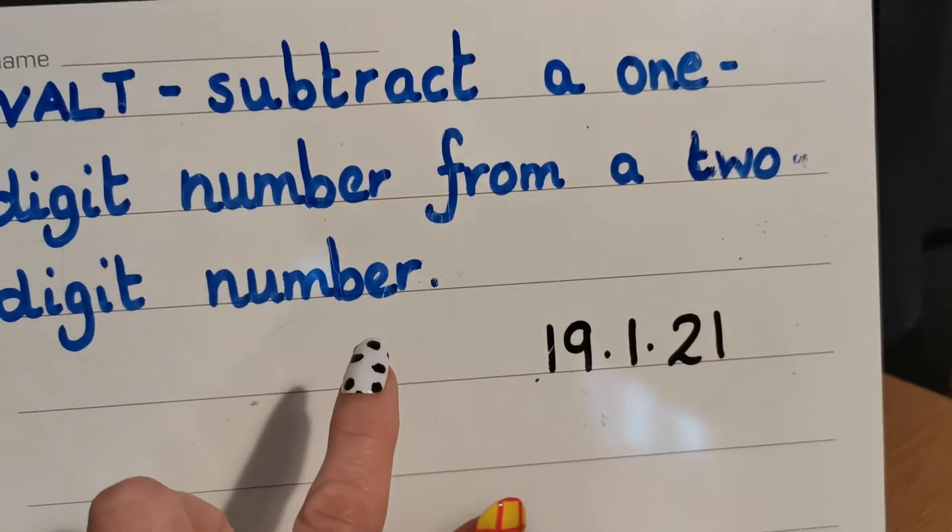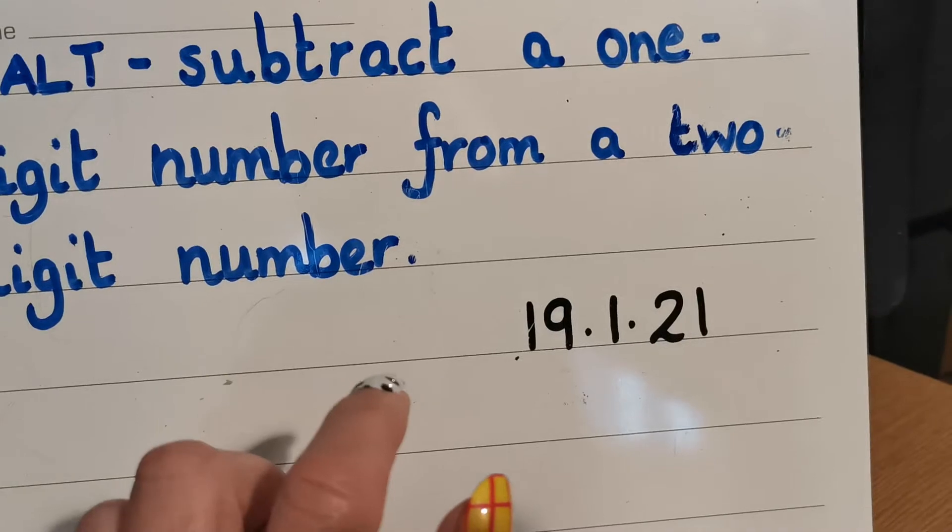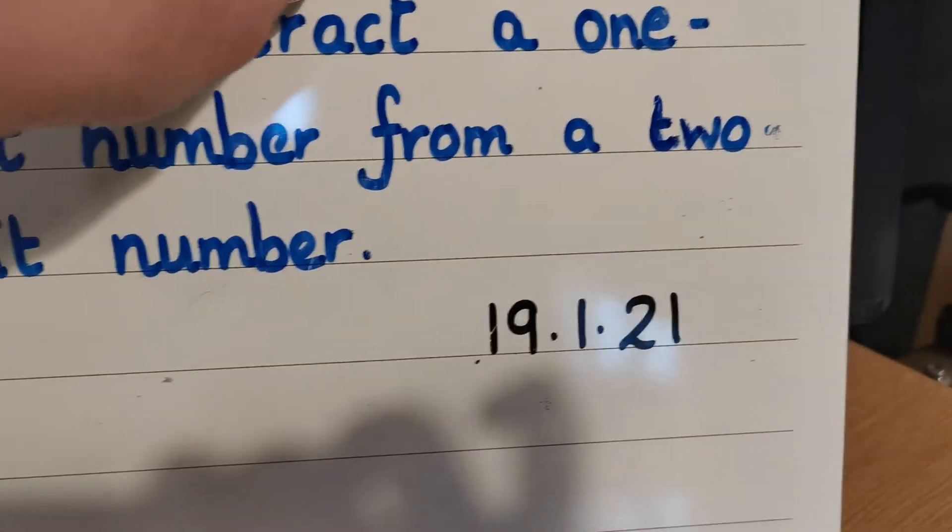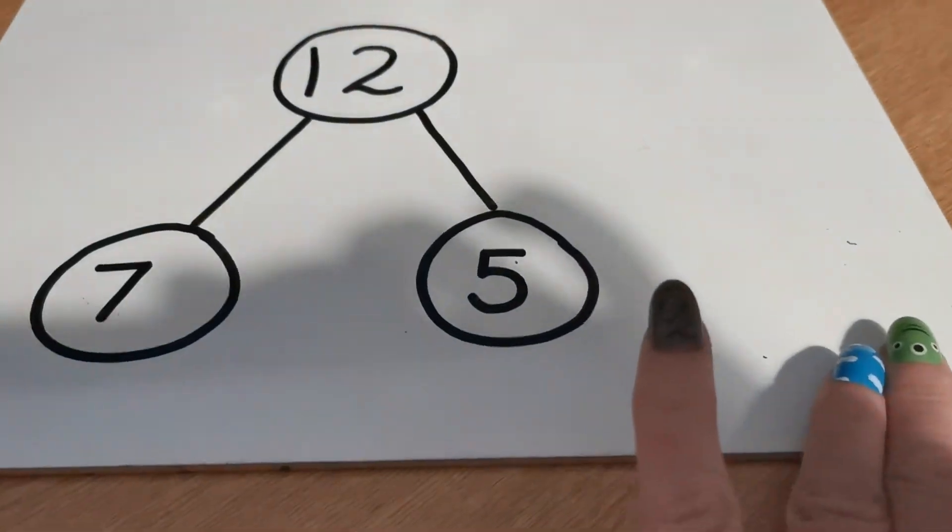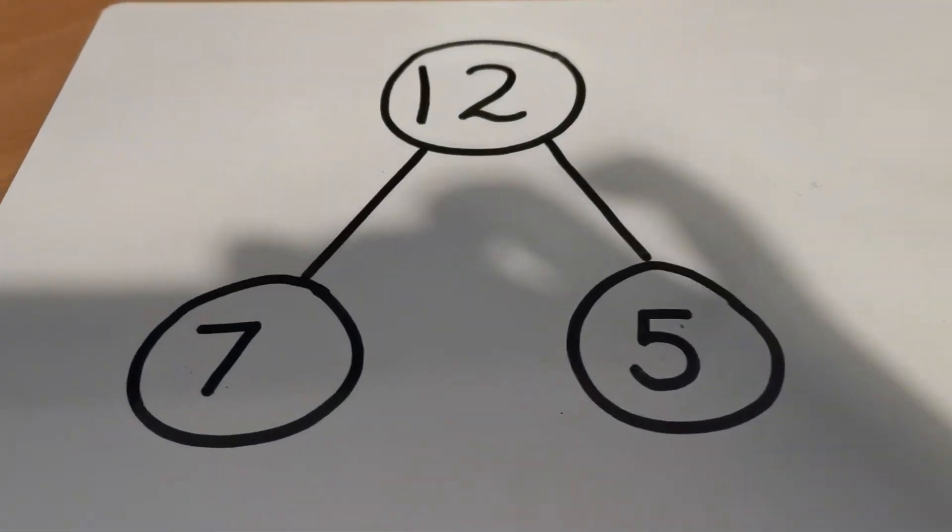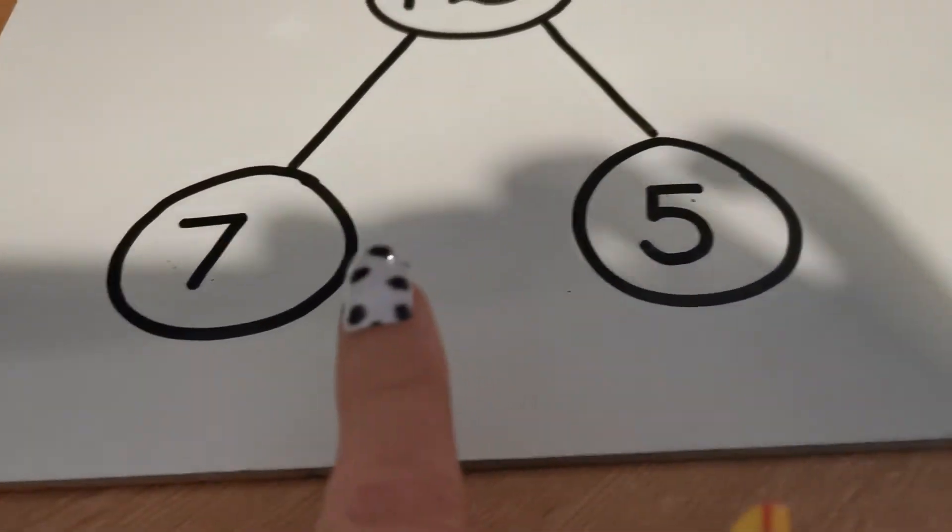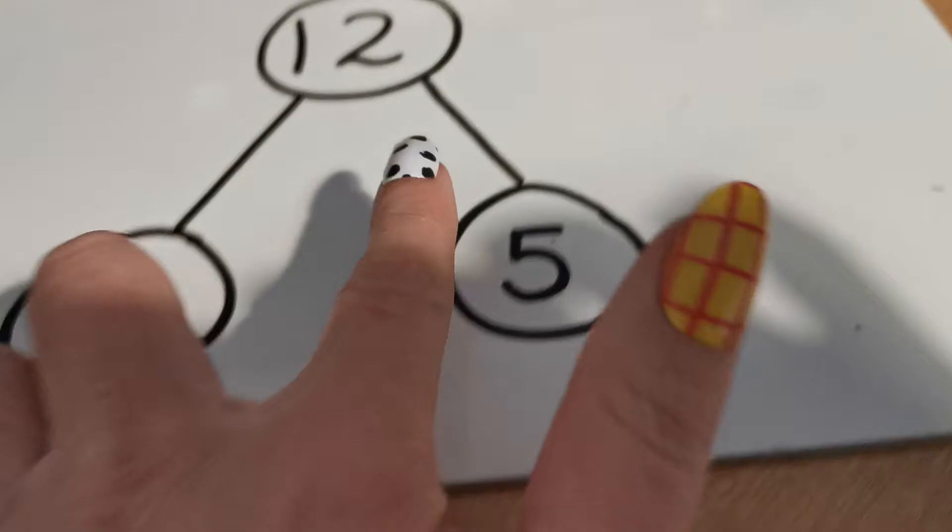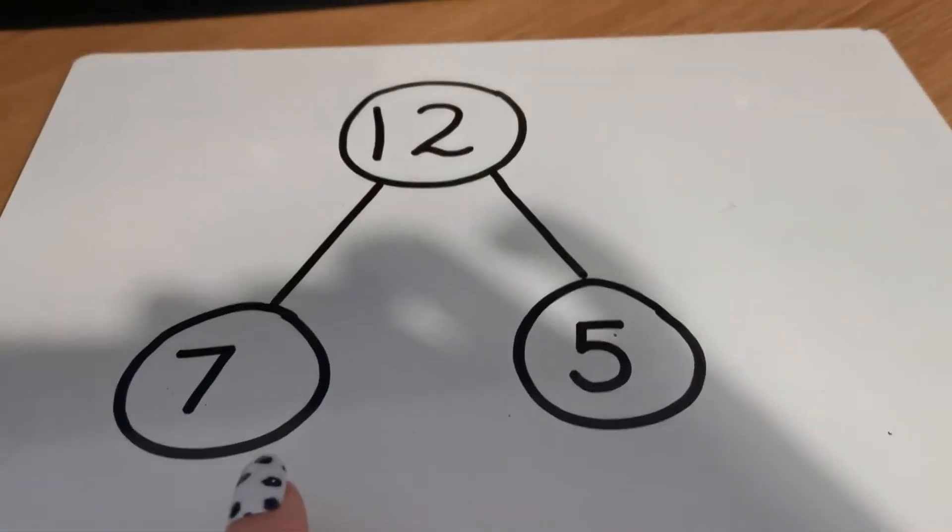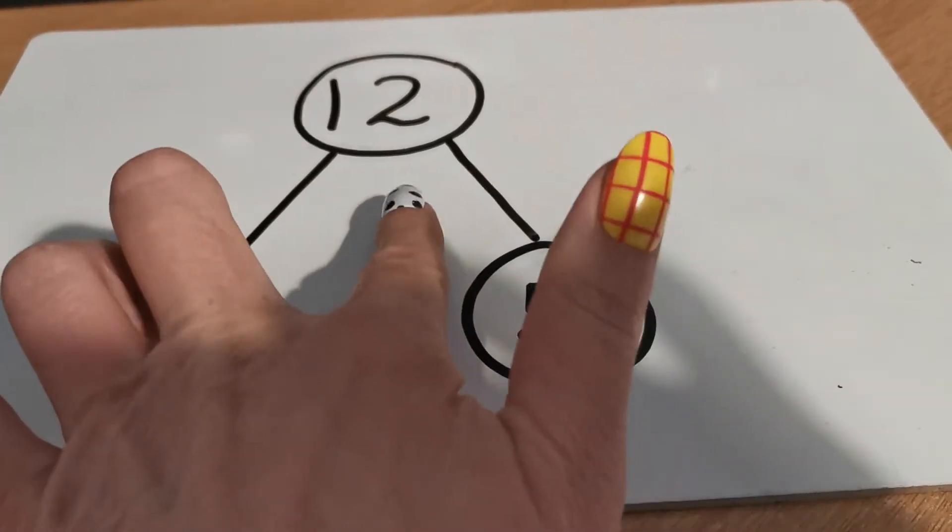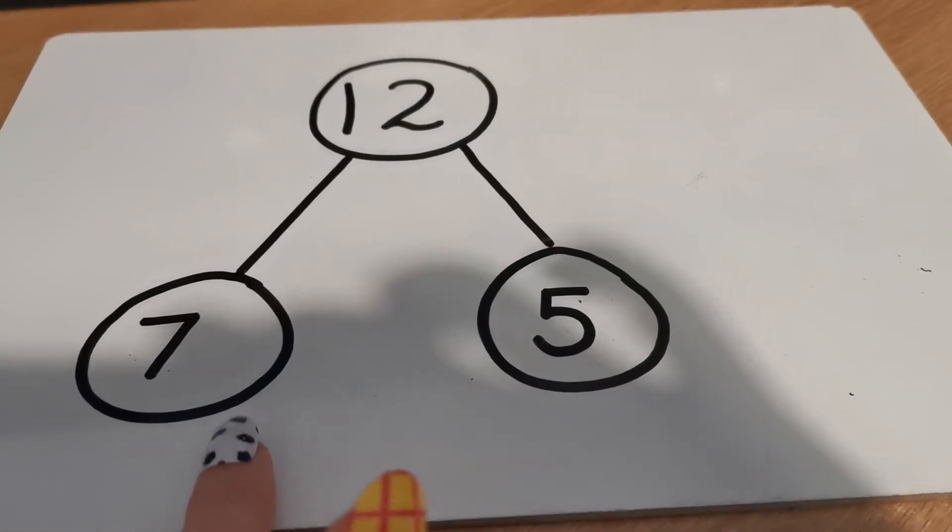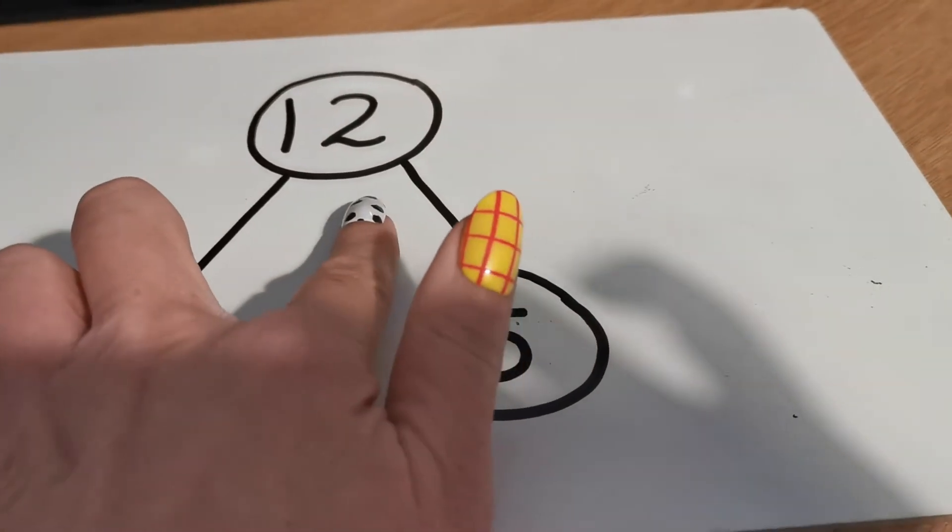So you did that yesterday, but today we're going to be using the part-part-whole model. So let's have a look at that on the back of my board. There's a part-part-whole model. Now when we've used these before for adding, we've added the two parts to make the whole. So we would have added 7 add 5 to make 12, or the switcher, 5 add 7 to make 12.